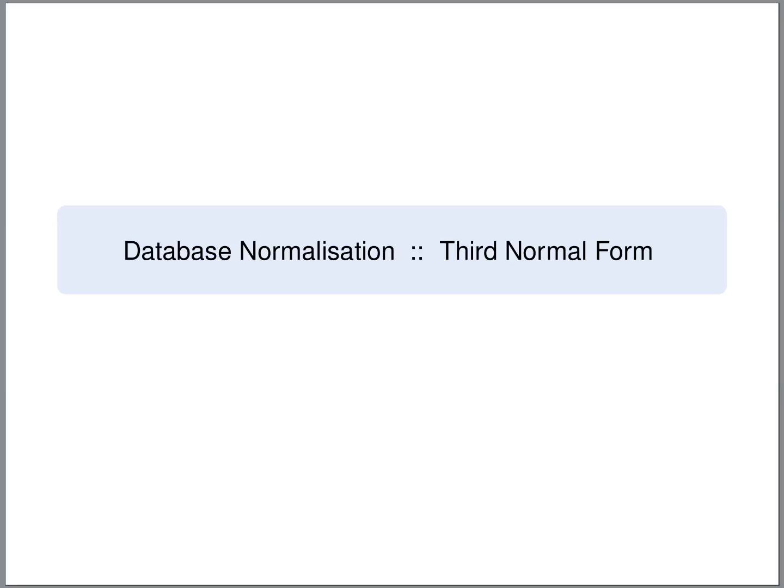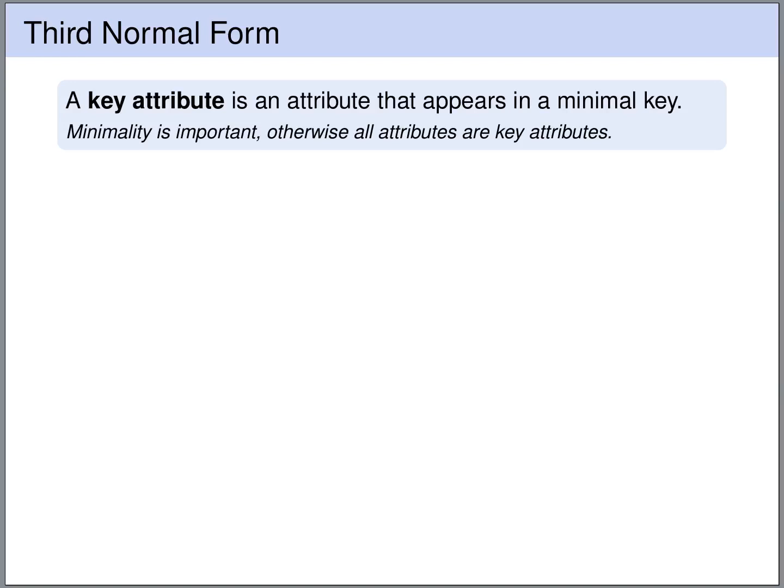The dominant normal form used in practice is the third normal form. It's very similar to the Boyce-Codd normal form, but it's slightly more general. For the definition of the third normal form, you need to know what a key attribute is. A key attribute is an attribute that appears in a minimal key. The restriction to minimal keys is really important here, because otherwise every attribute is a key attribute — the set of all attributes is a key.